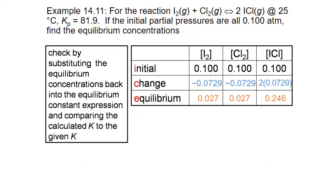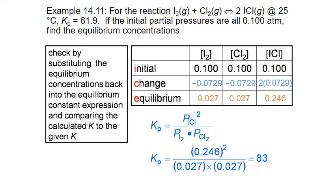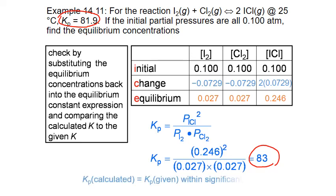We now have our equilibrium concentrations for each reactant and product. As a final check, we substitute these back into the equilibrium expression and get K sub P of 83. It's not exactly 81.9, but accounting for rounding during calculations, it is within reasonable limits.